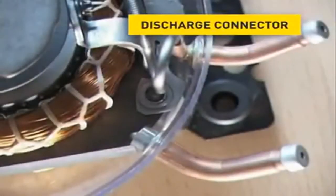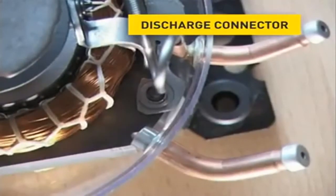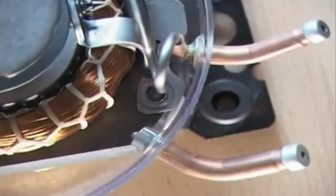The Discharge Connector. It is firmly connected with the refrigerating circuit of the appliance in the same way as the suction connector. Through this connector, the compressor discharges the compressed refrigerant to the condenser.